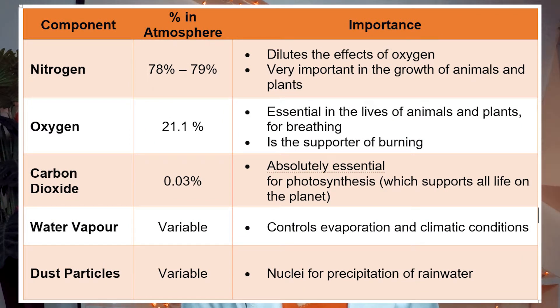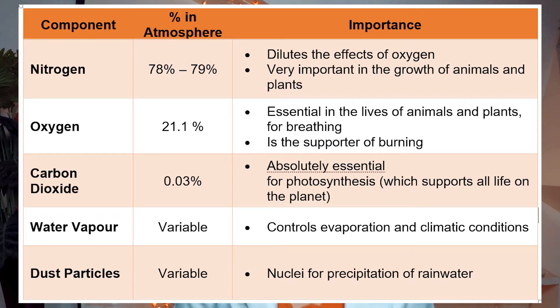What are those components? First, air is made up of nitrogen — 78 to 79 percent — which is very important in the growth of animals and plants. Then we also have oxygen at 21.1 percent, essential for breathing in the lives of animals and plants. Then we also have carbon dioxide at 0.03 percent, absolutely essential for photosynthesis which supports all life on the planet. Air is also made up of water vapor, whose composition is variable and controls evaporation and climatic conditions, as well as dust particles — also variable — which serve as nuclei for precipitation of rainwater.